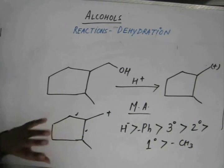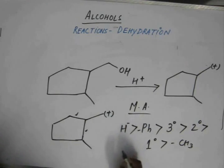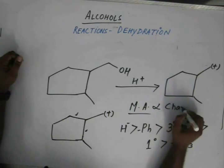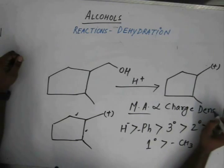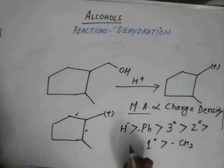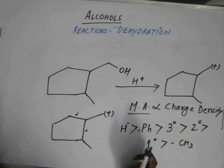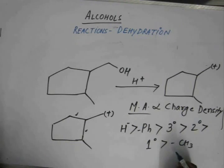Why is this following a trend like this? The migratory aptitude is directly proportional to the charge density. As we can see, hydrogen, the hydride ion, being very small with a negative charge over it, has the largest charge density followed by the phenyl, the three degree, two degree, and one degree.